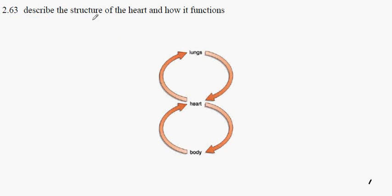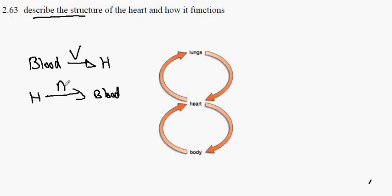2.63: Describe the structure of the heart and how it functions. Here we'll focus on the description. If blood is going into the heart, the blood vessel is called a vein. If the blood is coming out of the heart, that kind of blood vessel is called an artery.